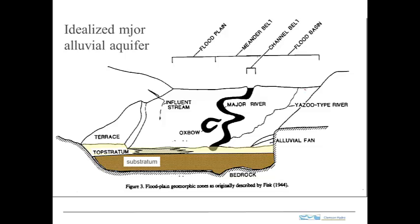Let's take a quick look at the conceptual model for an alluvial aquifer. This is a major alluvial aquifer with a major river in a meander belt. There are some oxbow lakes, which are important because they can have clays deposited in them. Once we get out from the meander belt, this is the floodplain. The river is reworking sediments and is capable of carrying coarse-grained material, so we'd expect to find coarse-grained material associated with the river channel.